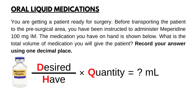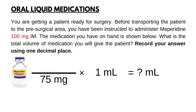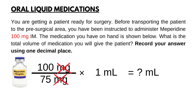Now that the formula is ready, we need to plug in the numbers. Start with have and quantity: 75 mg per 1 ml. For desired, you plug in the doctor's order: 100 mg. Since both units on top and bottom are the same mg, we can start calculating. 100 mg divided by 75 mg times 1 ml — milligrams cancel out and the answer is 1.33 ml.